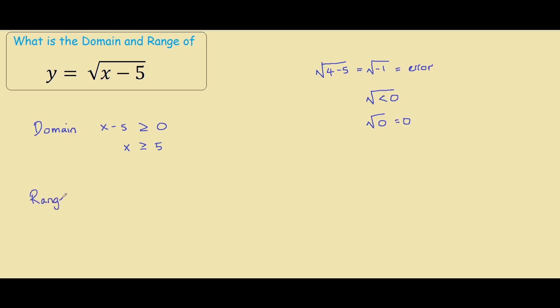For our range, we simply consider all the numbers this equation can produce for y, which is y greater than or equal to 0. This is because our minimum value we can plug in is 5, which gives us 5 minus 5 equals 0. We can't get any number less than 0, so our range for y is all numbers greater than or equal to 0.